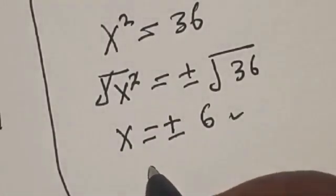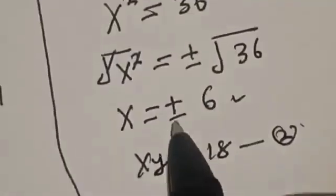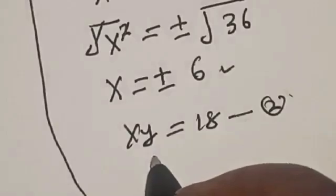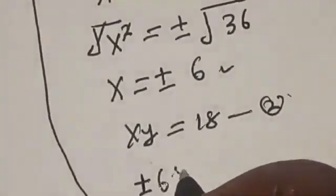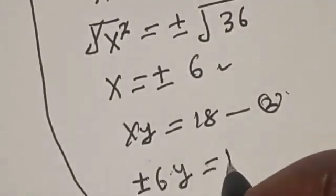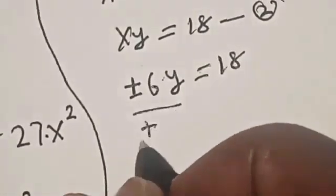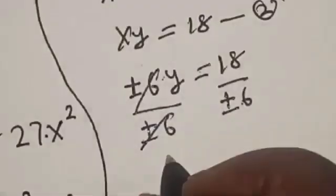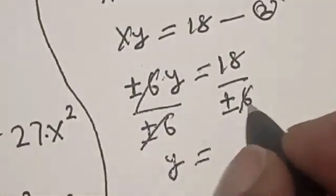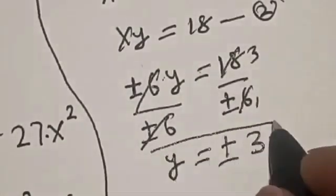Our equation 2 is xy equals 18. Since x equals plus or minus 6, we have plus or minus 6 times y equals 18. Dividing both sides by plus or minus 6, this cancels, giving y equals plus or minus 3. That is the value of y.